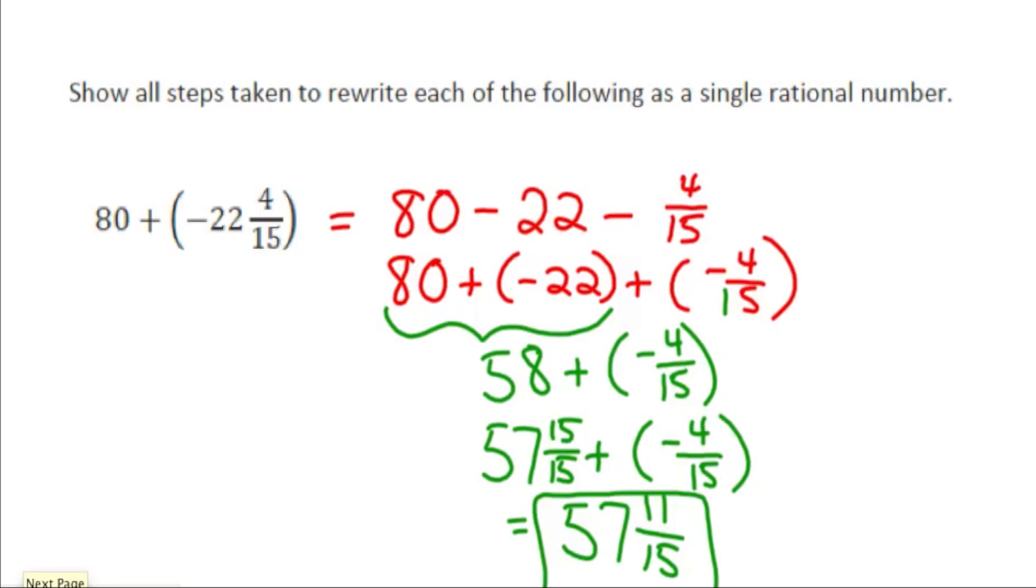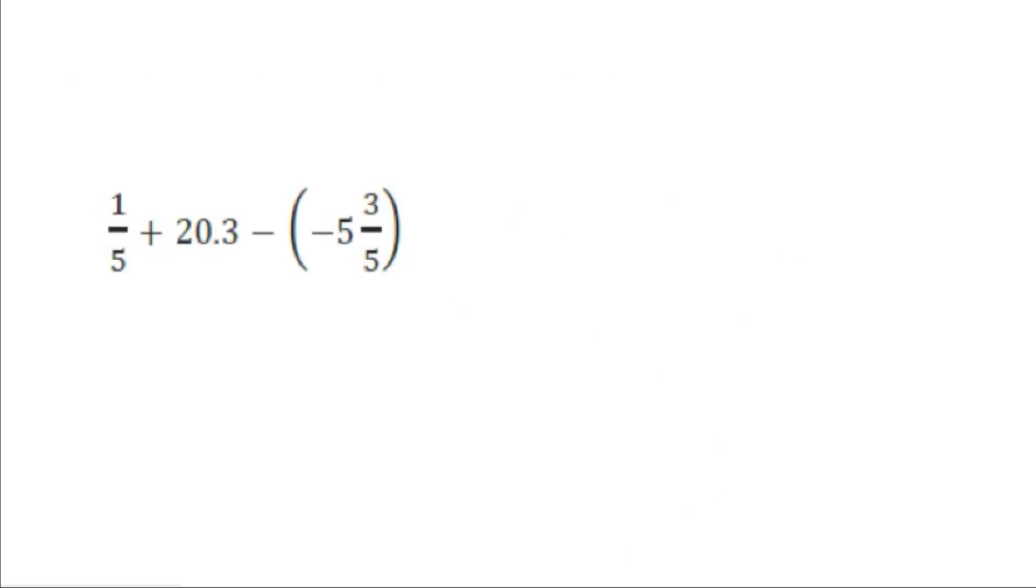Now let's jump to question number 3. This one combines decimals and fractions. It reads 1 fifth plus 20.3 minus negative 5 and 3 fifths.